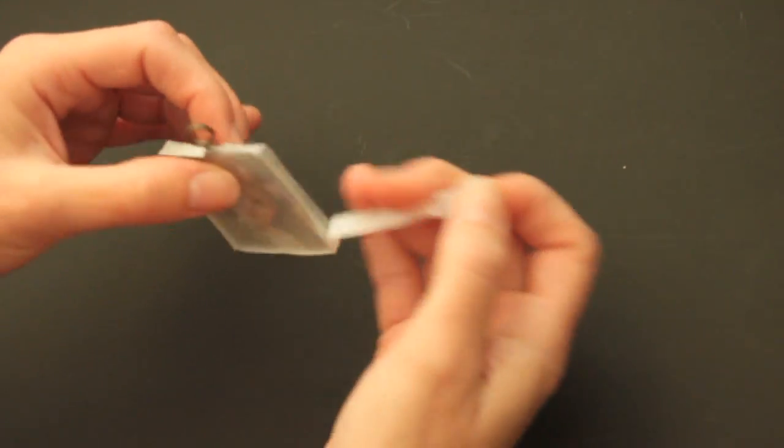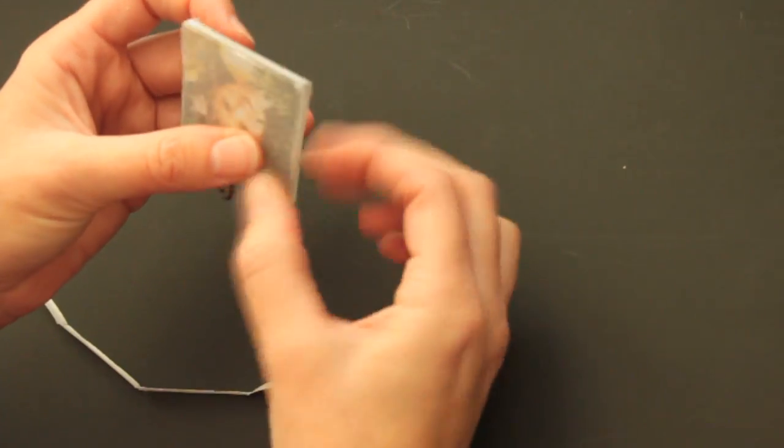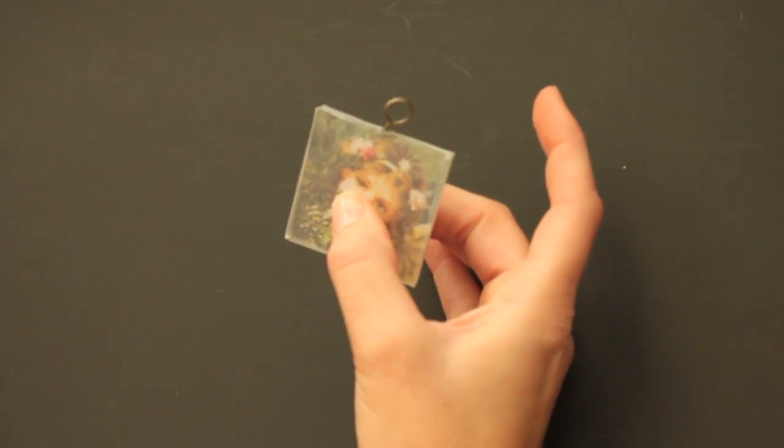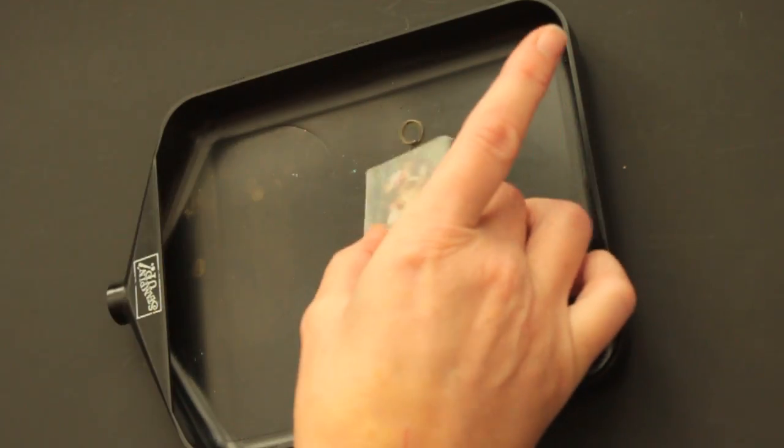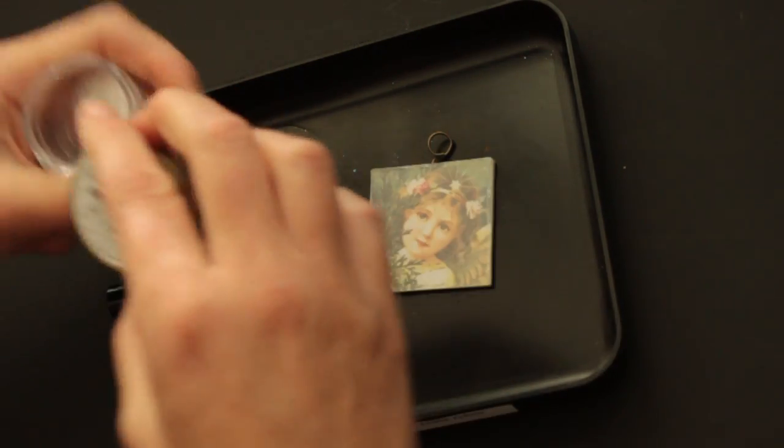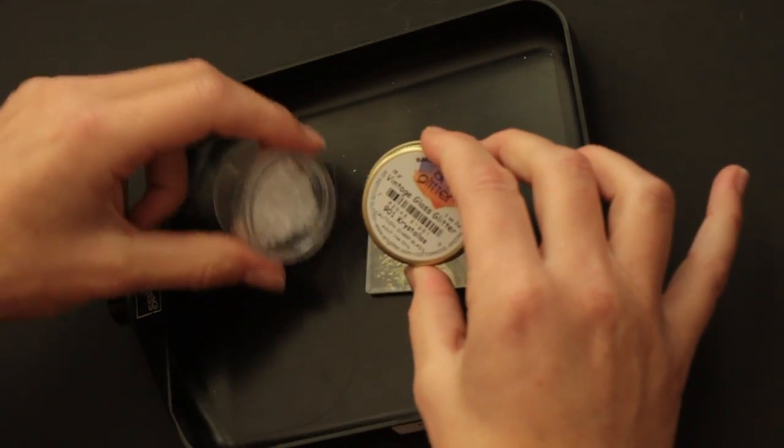Take the lining off and then add whatever you want around it to add some interest. I'm not sure how this will look, but I'm going to use vintage glass glitter.